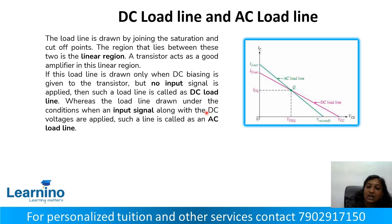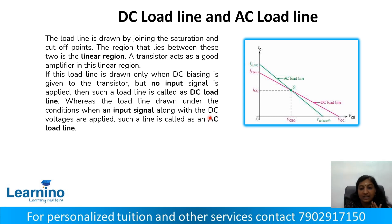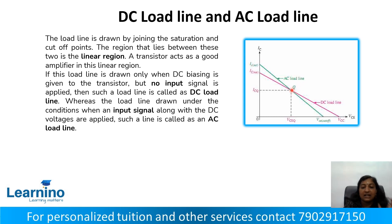The AC load line is drawn under the condition when the input signal along with the DC voltages are applied. The AC load line passes through the Q point on the DC load line. The Q point, which is the operating point, is very important and lies on both the DC and AC load lines.